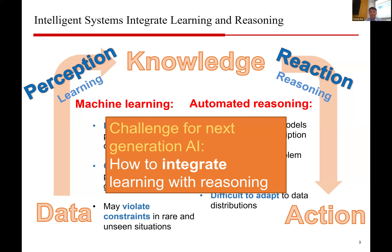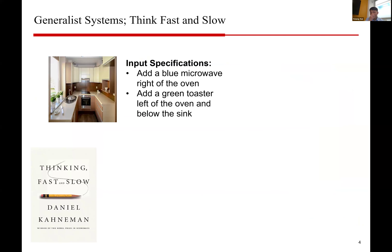These top-down models start from problem descriptions, which often leads to rigid models — you must agree on problem formulations before solving them, and such models may be difficult to adapt when data distributions change. I believe the grand challenge for next-generation AI is the integration of automatic reasoning and machine learning, and that is where my research lies.